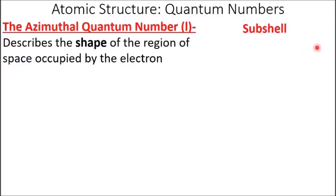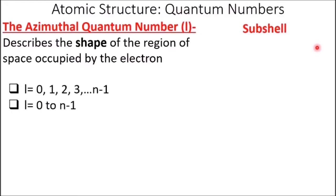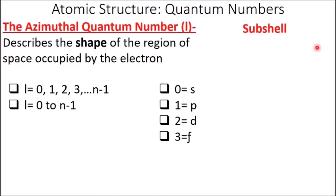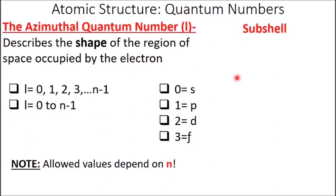The values S, P, D, and F are just representations of the L values 0, 1, 2, 3. Those letters come from spectroscopic properties — sharp, principal, diffuse, and fundamental — describing how these subshells look on line spectra, though that's not important to know. The allowed values of L depend on n. The magnetic quantum number ML describes the orientation of the region in space occupied by an electron with respect to an applied magnetic field. ML can have values of negative L to L — so if L was 1, you could have values of negative 1, 0, and 1. The allowed values for ML depend on L.